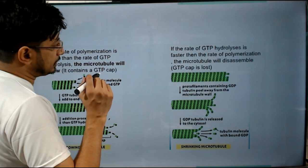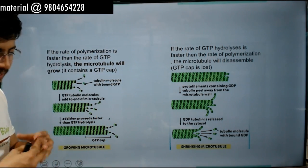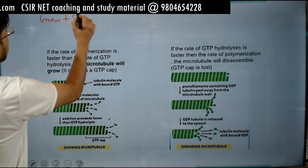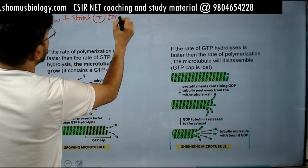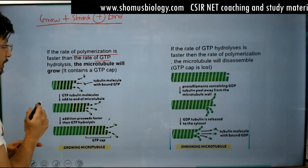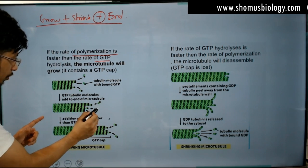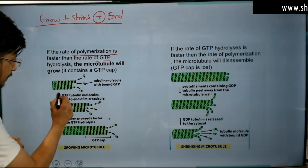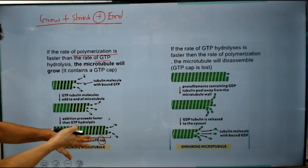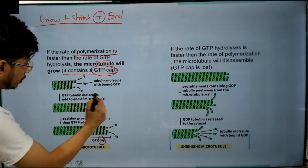One very important concept is the effect known as treadmilling — we also call it microtubule dynamics. Microtubules can grow and shrink from the plus end. If the rate of polymerization is faster than the rate of GTP hydrolysis, then the microtubule must grow. The microtubule contains a GTP cap at the end, and this GTP cap allows the microtubule to continue growing in that direction.